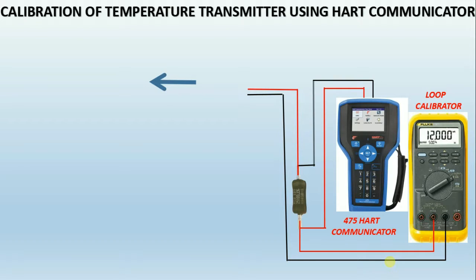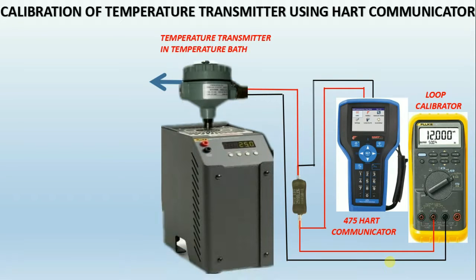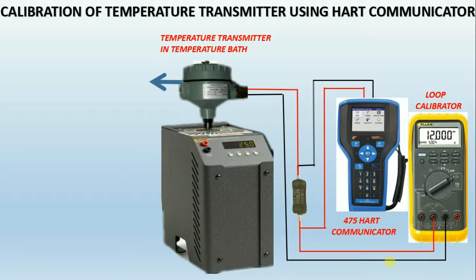Temperature calibration bath — if you need to calibrate temperature sensors with a portable calibrator, we will use this temperature bath for calibrating thermocouples, RTDs, thermistors, bimetallic switches, and more, with a temperature range spanning from minus 100 degrees Celsius to plus 1200 degrees Celsius.